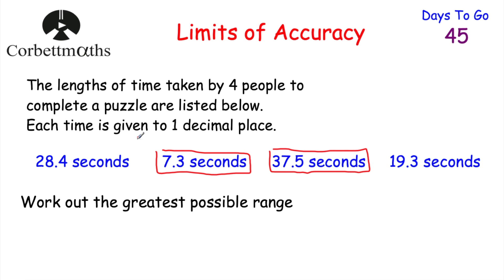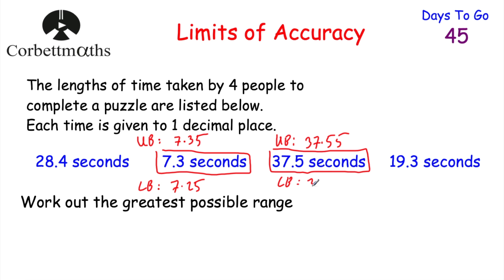For 7.3 seconds: the upper bound would be 7.35 seconds, and the lower bound would be 7.25 seconds. For the longest possible time of 37.5 seconds: the upper bound would be 37.55 seconds, and the lower bound would be 37.45 seconds. We've got the upper bound and the lower bound for each of these times, and we want to find the greatest possible range. So for the biggest number, we want to use the upper bound — we're going to use 37.55, that's the greatest possible time.